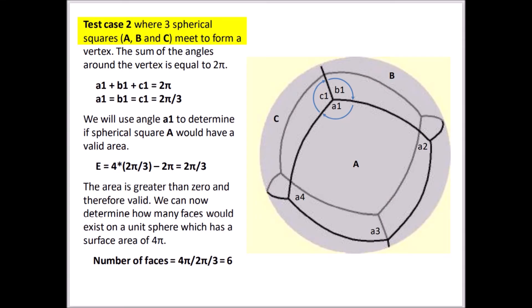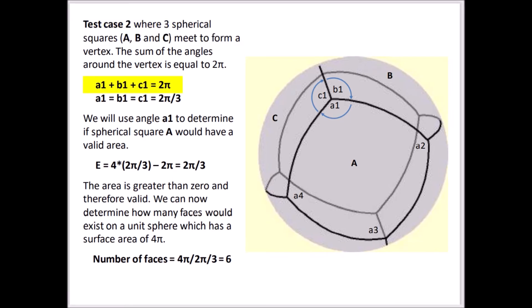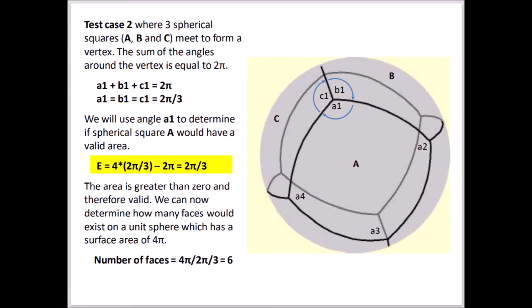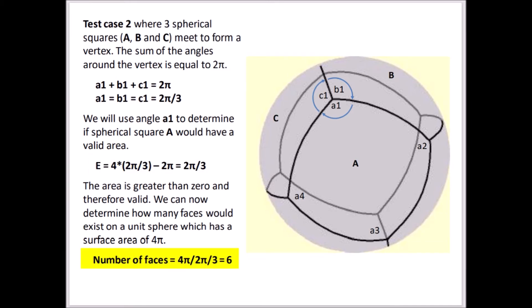For test case 2, three spherical squares meet at a vertex where the sum of the angles equals 2π, and the internal angles compute to 2π/3. Using this angle to compute the area of the spherical square results in an area of 2π/3. This is a valid area, and knowing that the area of the sphere is 4π, it would require six spherical squares to partition the sphere, corresponding to a spherical cube.